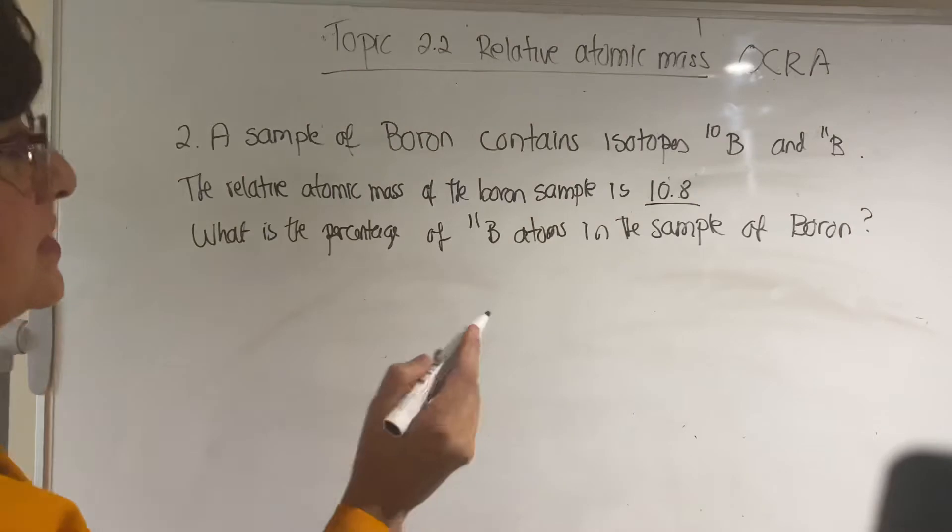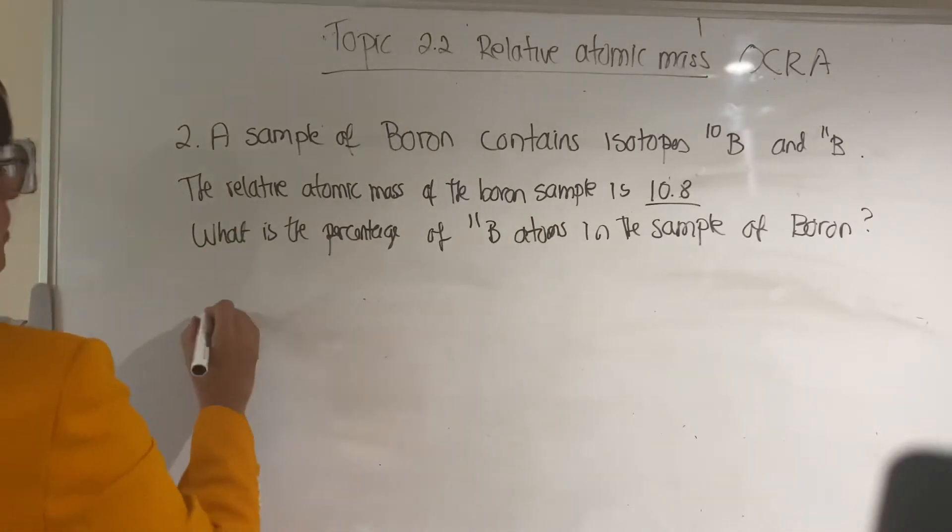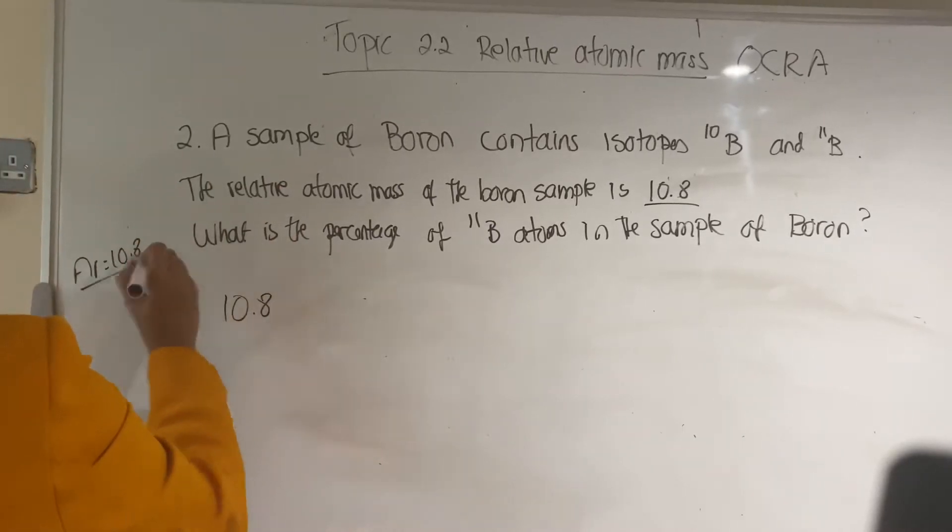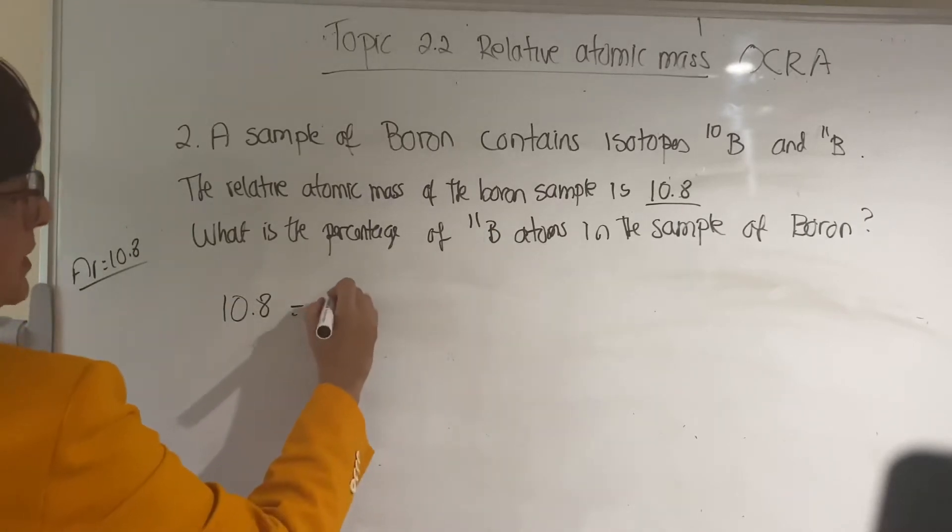The first thing you do is set it up, so you put the relative atomic mass. You know it's 10.8 because that's your Ar. So I can put here Ar equals 10.8, so you know that equals to isotope 10...